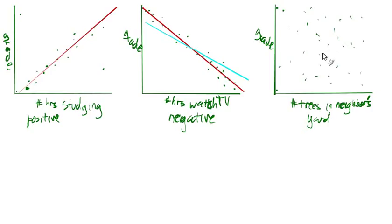You go to somebody's house, you look at their neighbor's house, they have 10 trees, and one person has a good grade. You go to somebody else's house, their neighbor has 10 trees, and they don't have a very good grade. That doesn't really matter. It doesn't seem like the number of trees in your neighbor's yard might have anything to do with your grade in a class. So this would be no correlation.